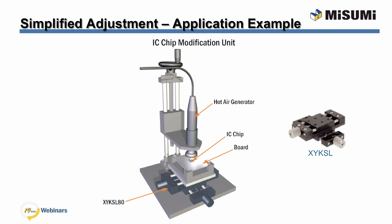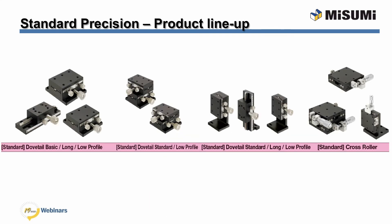This is an example of an IC chip modification unit utilizing the XY KSL simplified adjustment stage. With this setup, you will be able to reposition both the x and y-axis direction very quickly. This is our standard positioning stage product line, which features a dovetail guide and rack and pinion feeding method.